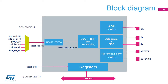This is the USART block diagram. The USART clock source, USART-KERCK, can be selected from several sources: the peripheral clock or APB clock, the PLL-4Q, the PLL-3Q (only in case of USART-1), the high-speed internal RC oscillator, the low-speed internal oscillator CSI, or the high-speed external oscillator HSE. The USART clock source can be divided by a programmable factor in the USART-PRESC register.